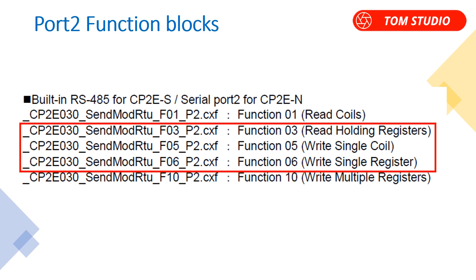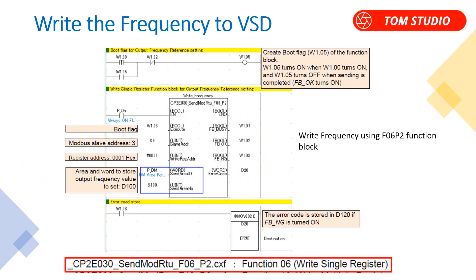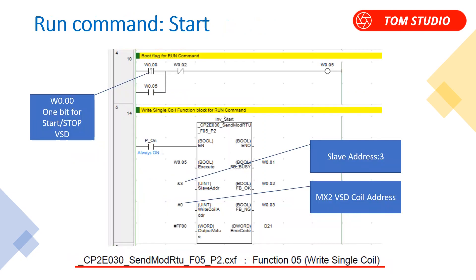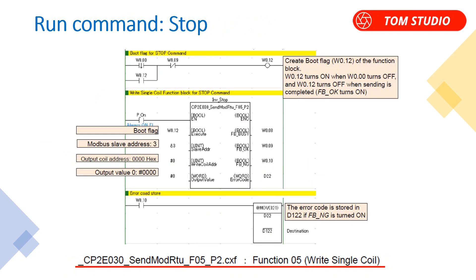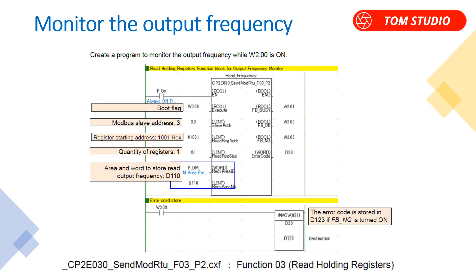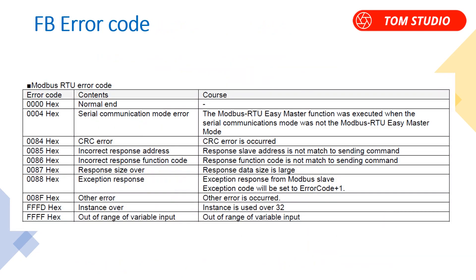Using the send Modbus function 6 function block to write frequency to the 3G3 MX2 VSD. Using function 5 write single coil function block to enable VSD run, and the same method to stop the VSD. Lastly, using function 3 function block to monitor the VSD output frequency. Example programs, function blocks, and a PDF tech note will be attached for subscribers to download. Use the error code list for fault finding — for example, error code 0088 means you forgot to set up the DIP switches for the CP1W CIF11 option board.